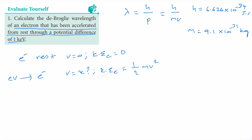Therefore, kinetic energy is equal to half mv squared. We can equate the energy due to the accelerating potential with the kinetic energy of the electron. So half mv squared is equal to eV, because that kinetic energy whatever the electron gets is due to the potential difference we are applying. Therefore eV is equal to half mv squared.